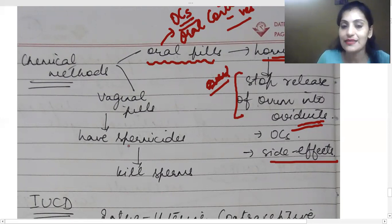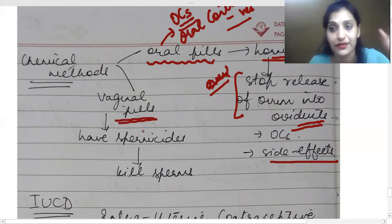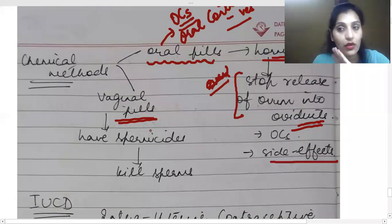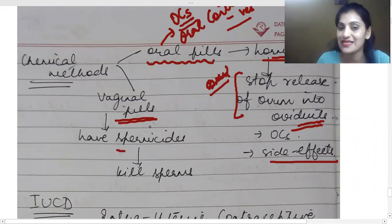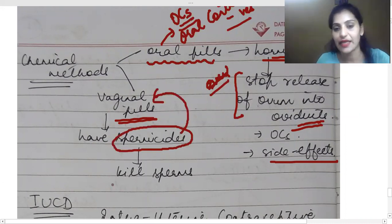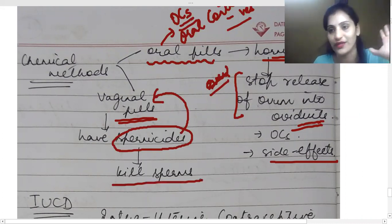The second type of pills are vaginal pills. Now these vaginal pills are placed in the vagina where the sperm has entered. So if we finish the sperm, obviously it will not reach ovum. So to kill them, you have spermicides. These spermicides, they are present in vaginal pills. What will they do? They will kill the sperm. And thereby there will be no gamete cell for the ovum, so ovum will not be fertilized.